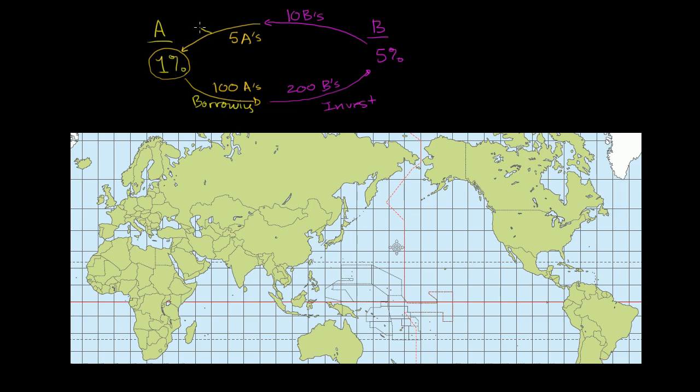So they only have to pay 1 A in interest, and so they're just going to get 4 A's. They're going to get 4 A's per year. If we assume constant exchange rate, they're going to get 4 A's a year for free, assuming that they could continue to do this.